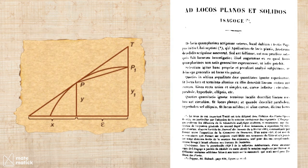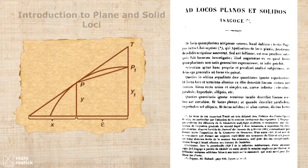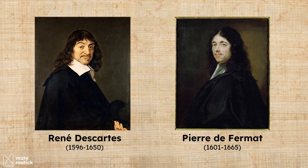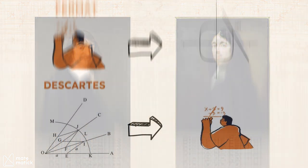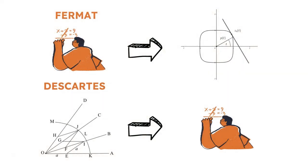These ideas were published posthumously in 1679 in Ad Locos Planos et Solitos Isogage, Introduction to Plain and Solid Loci. Here's the difference between Descartes and Fermat. Fermat kicked off by looking at an algebraic equation and then figured out the geometric curve it represented.